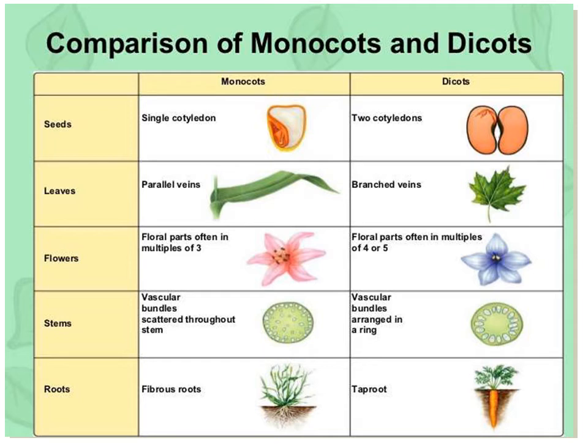Looking at flowers: in monocots, floral parts are often in multiples of three, as you can see here. But in the case of dicots, floral parts are often in multiples of four or five. Based on the flower you can distinguish what is a monocot plant and what is a dicot plant.